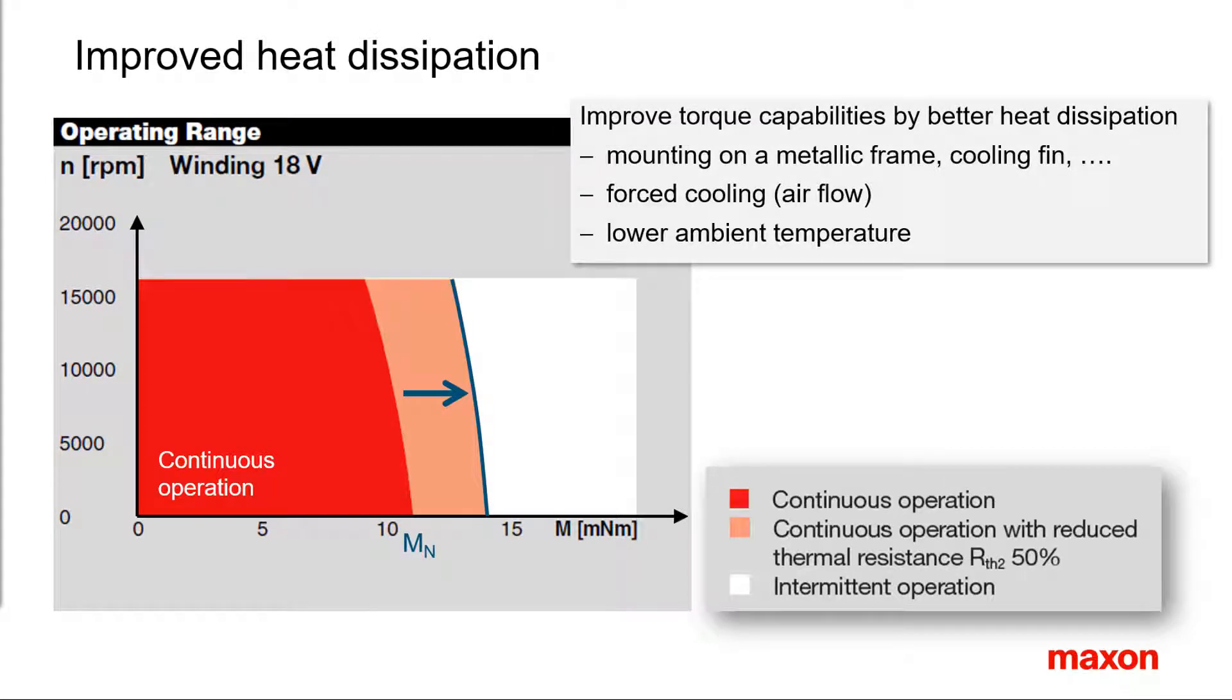This can be achieved, for example, by mounting the motor on a large heat dissipating structure, for instance a metallic frame or a cooling fin. Heat dissipation is also improved at low ambient temperature or by forced airflow.